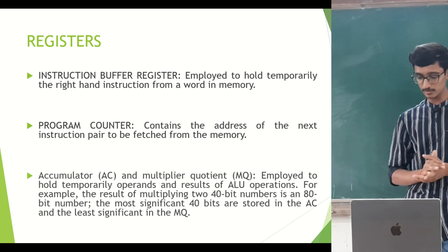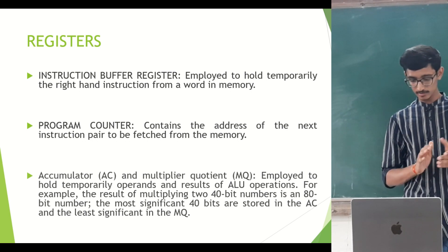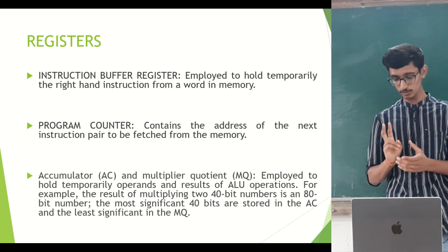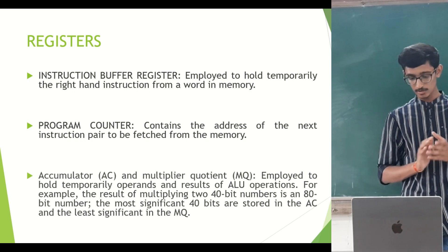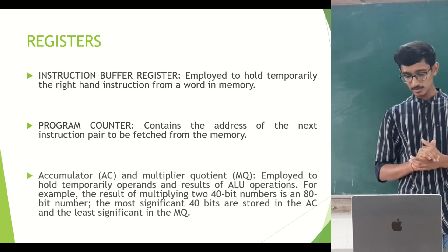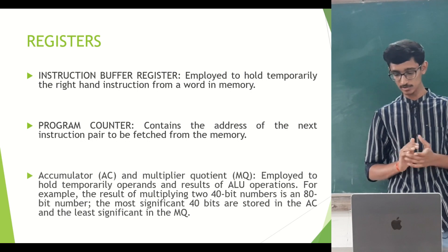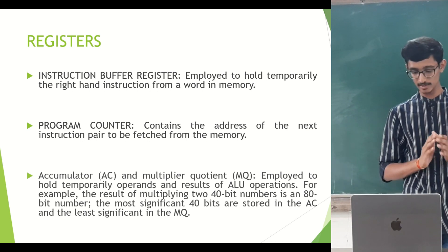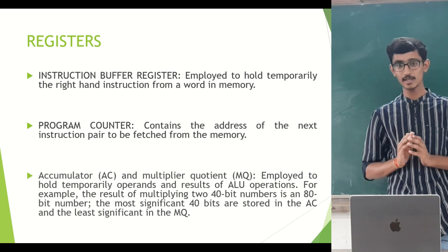For example, the result of multiplying a 40-bit number is an 80-bit number. The most significant 40 bits are stored in the AC and the least significant are in the MQ.